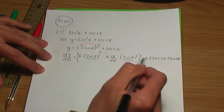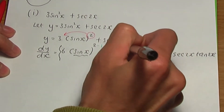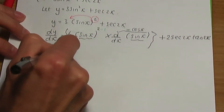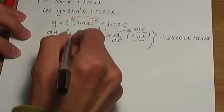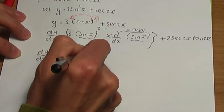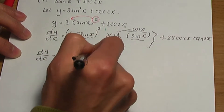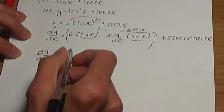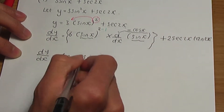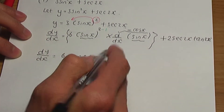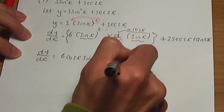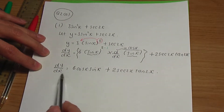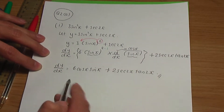Let's simplify. d/dx of sine x gives cos x. So dy/dx is going to be 6 cos x, with the sine x term, giving 6 sin x cos x for the first term. Don't forget to add the 2 sec 2x tan 2x. That is the solution to part 1 of A.